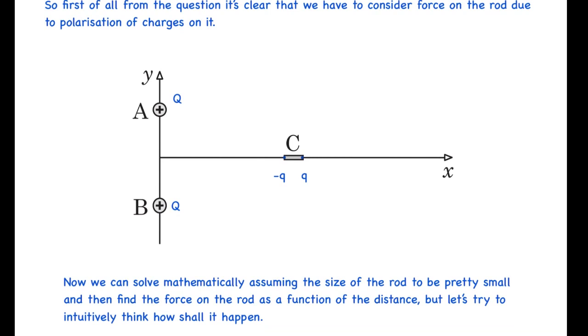Here I have assumed that we have polarized the charge of minus q on the closer end to the two charges and plus q on the opposite end. I was assuming the two charges to be capital Q, although the values won't be necessary at all. The rod is very small, so this can be assumed at its faces. Now we can solve mathematically assuming the size of the rod to be pretty small and then find the force on the rod as a function of the distance. But let's try to intuitively think how shall it happen.